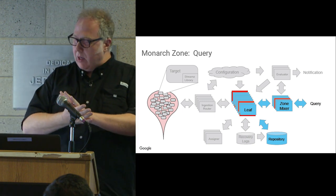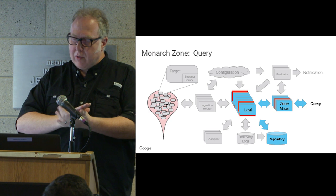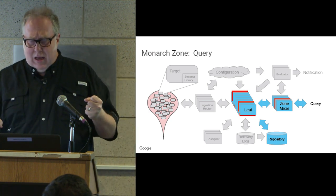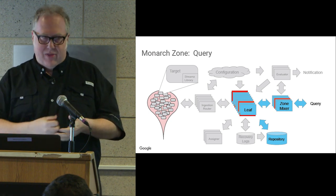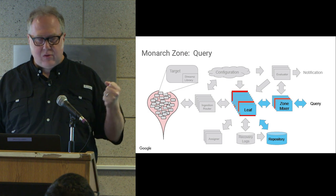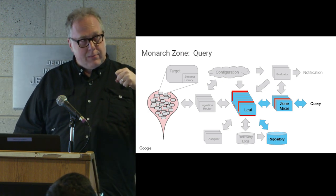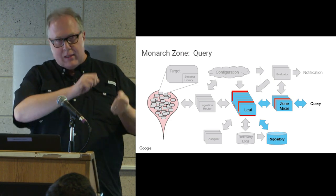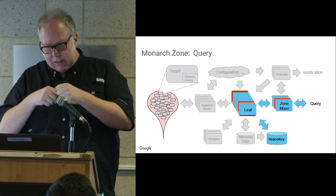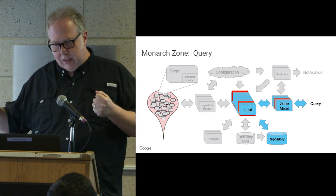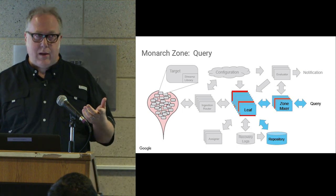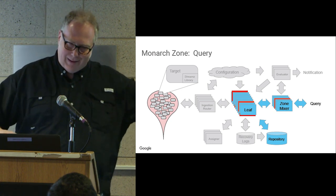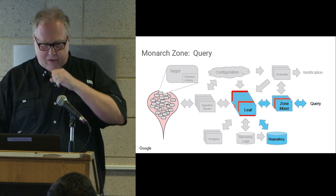Queries happen within a local zone. They come into a job called a zone mixer. The zone mixer selects leaves based on where it thinks the data is, sends the queries to them. The leaves combine data from their in-memory database and whatever might be in the historical repository that's relevant, do their part, and send data back to the mixer. The mixer does its part and sends the result back to the originator. This is done in a streaming fashion — you can do queries much larger than any node can fit in memory, with data streaming through using clever buffering at each node.